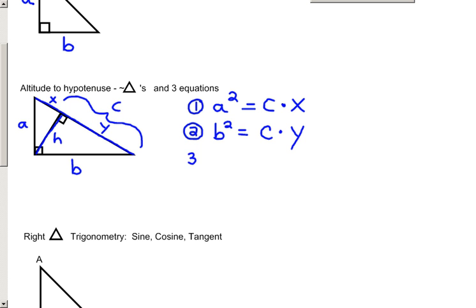And finally, the third altitude on hypotenuse theorem relates the two side-by-side smaller right triangles. The equation that results is that the altitude squared equals the product of the pieces of the hypotenuse. So in this example, H squared would equal X times Y.